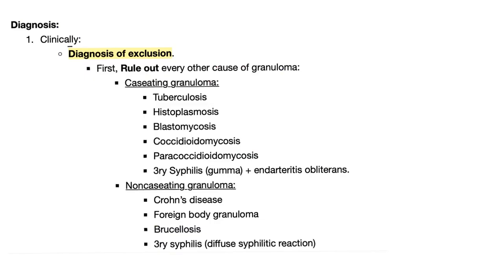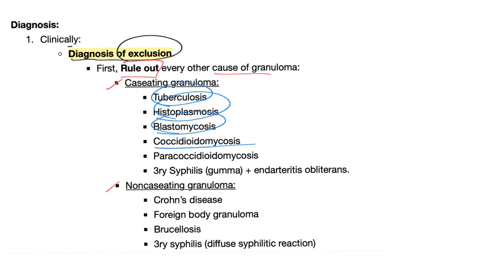Diagnosis of sarcoidosis — clinically it's a diagnosis of exclusion. First you have to rule out every other cause of granuloma. You have caseating granulomas and non-caseating granulomas. Just a few examples of caseating: tuberculosis, histoplasmosis, blastomycosis, coccidioidomycosis, paracoccidioidomycosis, and tertiary syphilis.